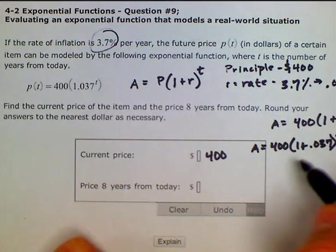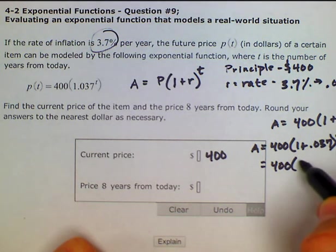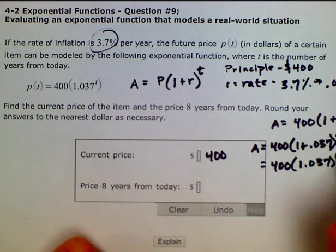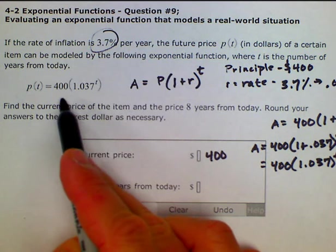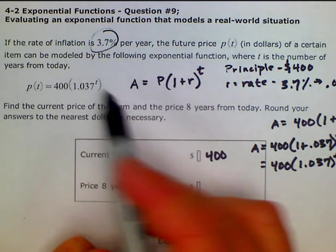And then as we simplify that, that is equal to 400 times 1.037 raised to the T, which is identical to our formula over here. So I just wanted to explain where this formula comes from.